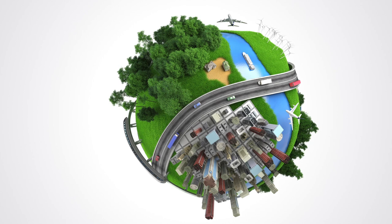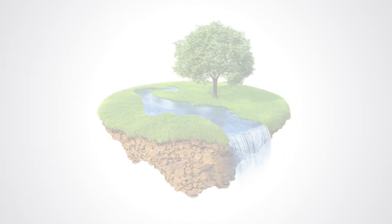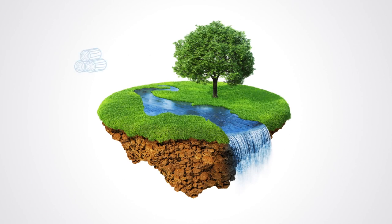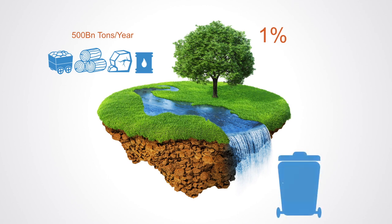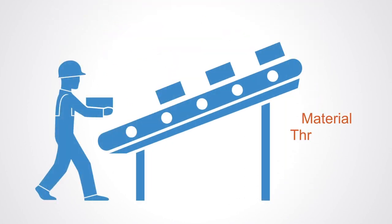To give us some appreciation for just how inefficient this overall linear model is, the Rocky Mountain Institute estimated in the year 2000 that the flow of natural materials globally is 500 billion tons per year, but only one percent is put into durable products and still there six months later. The other 99 percent is waste.